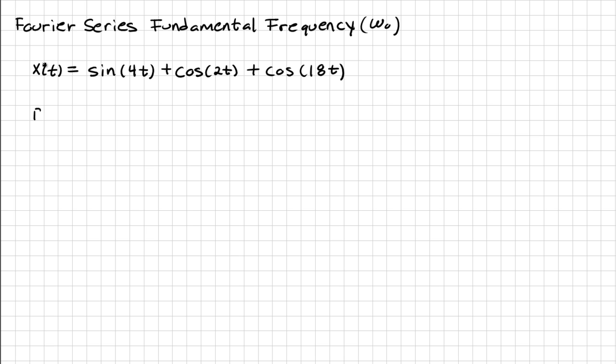The first step is to identify each individual frequency from your function. So for this case, my frequencies are 4, 2, and 18. In other words, they are the constant that is multiplying with t.